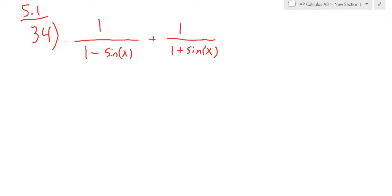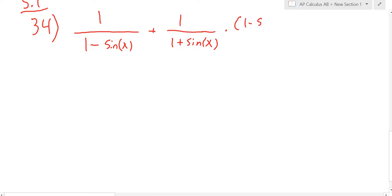And we get common denominators by multiplying so we have the same thing in the denominators. Because one has a minus and one has a plus here, we've got to multiply both of them by each other. So this fraction over here, I need to multiply by 1 minus sine of x.